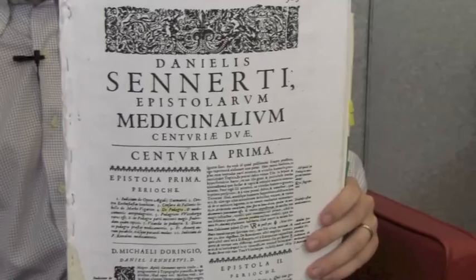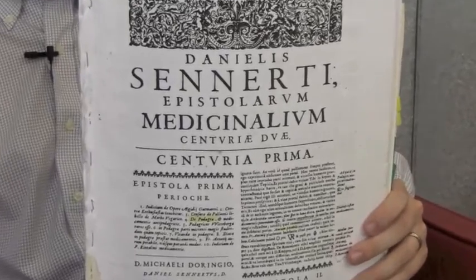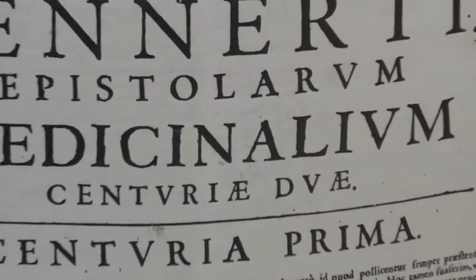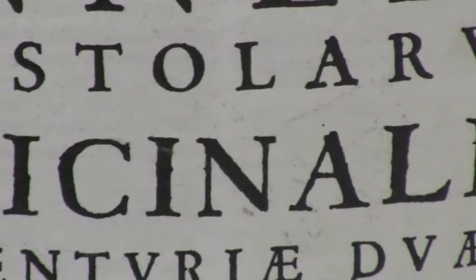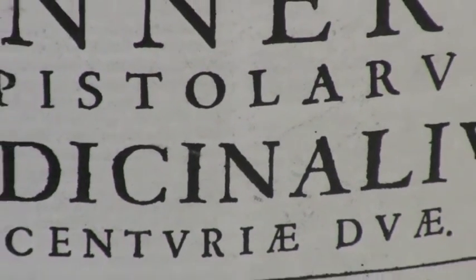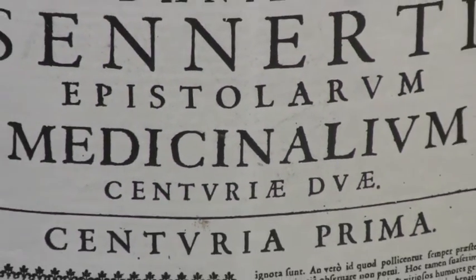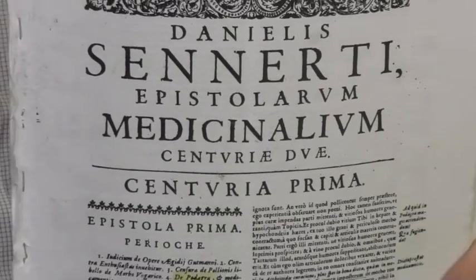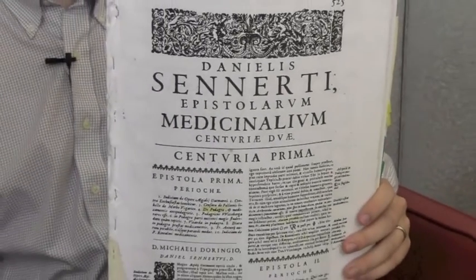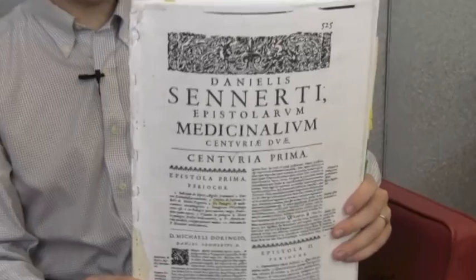This is Senert's correspondence, the letters that we have that he wrote between 1619 and his death in 1637. There are just over 200 letters here. Most of them are written to his son-in-law and fellow physician Michael Döhring.